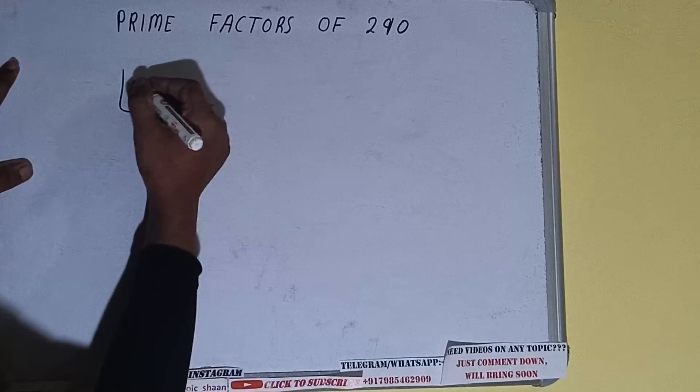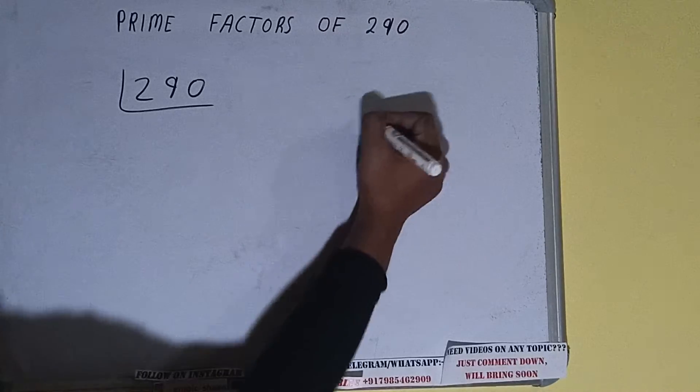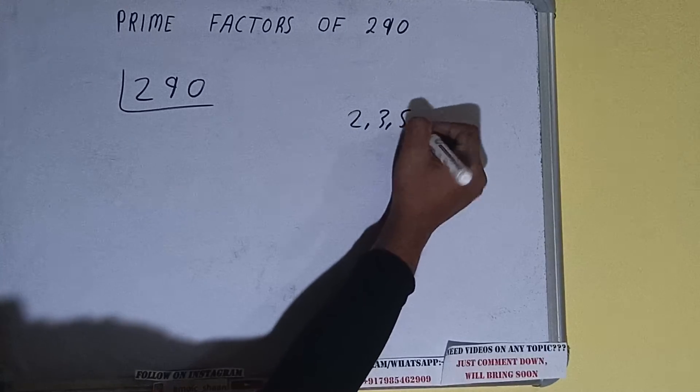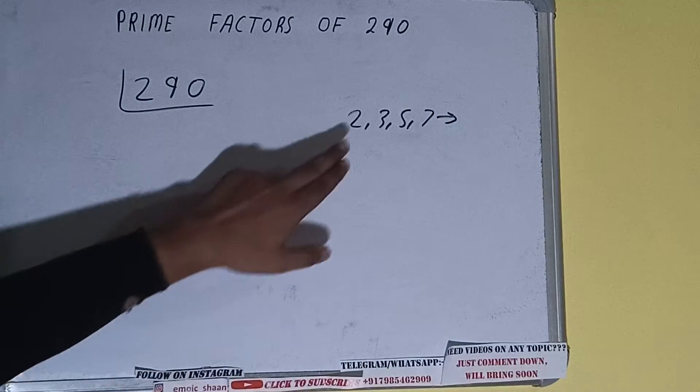Let's start. First of all, we need to write the number like this. The next thing we need to know about is what are prime numbers. Prime numbers are numbers that are divisible by one and the number itself, like 2, 3, 5, 7, and so on. All right, so we'll check with the lowest prime number we have, that is 2.